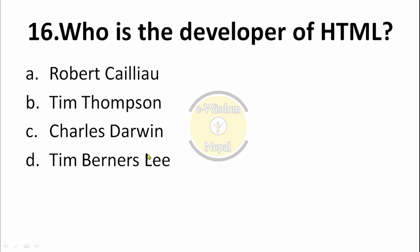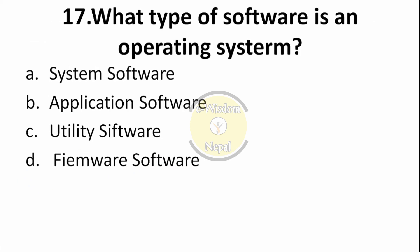Question number 17: What type of software is an operating system? Computer software types include system software, application software, utility software, and firmware. The correct answer is option A — system software. An operating system is a system software.